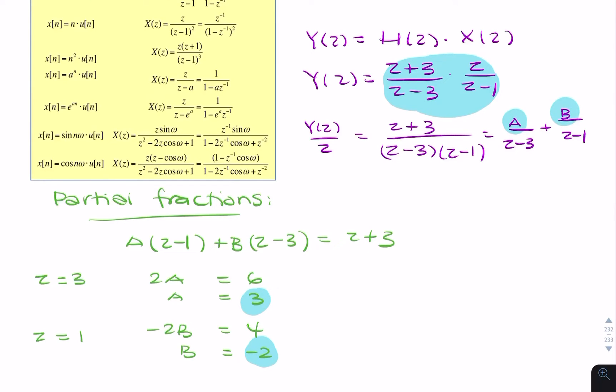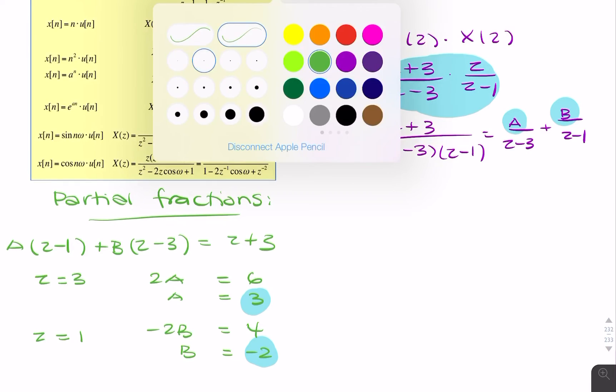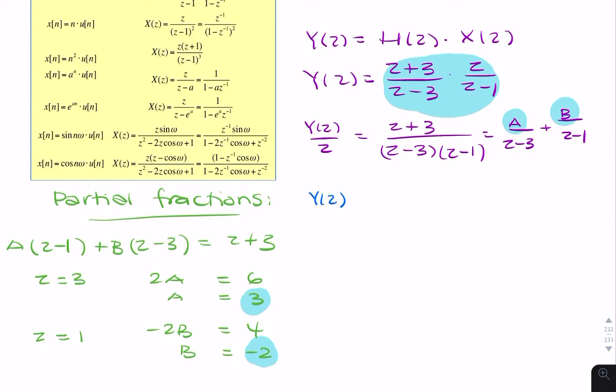Now I know a and b, I can put these back. y of z equals 3 times z over z minus 3, so this z is that z there when you multiply it by z, minus 2z over z minus 1.